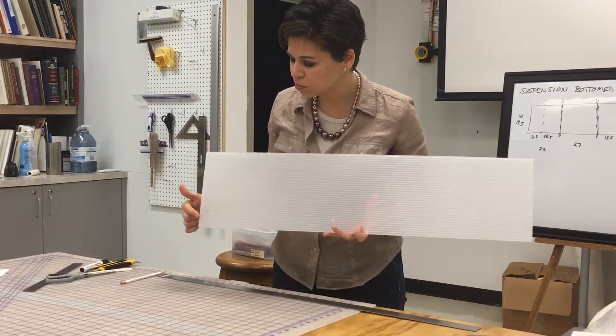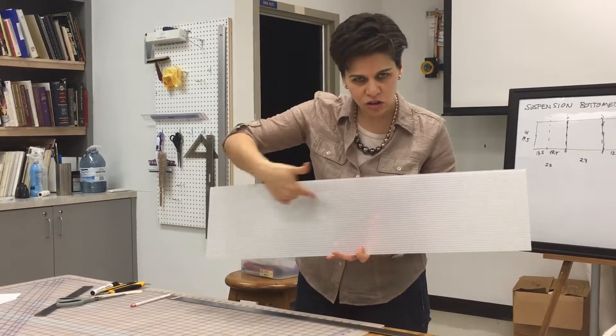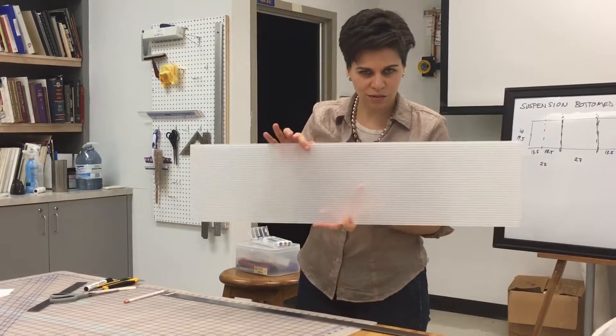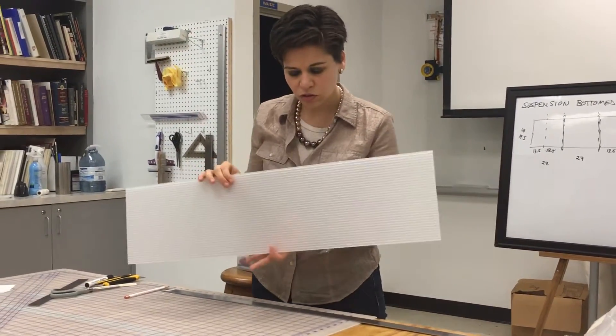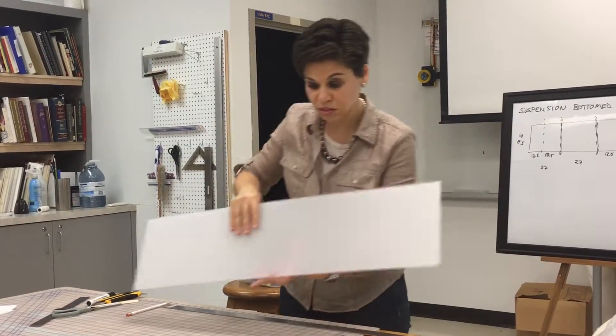So we want it to be one width and three lengths long, and we're aware of the direction of the corrugations because we need that for our springiness of our suspension bottom. Okay, so this piece is 81 centimeters long, so we're going to divide it into three sections.